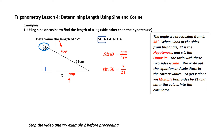Now I need to get x alone. How do I get rid of 21? x is being divided by 21, so to get rid of it, I would multiply both sides by 21. This allows the 21s on the right-hand side to cancel, leaving me with x is equal to 21 multiplied by the sine of 56.